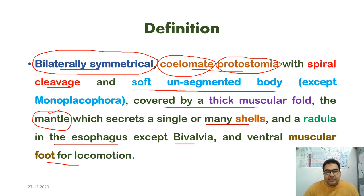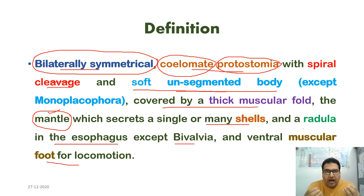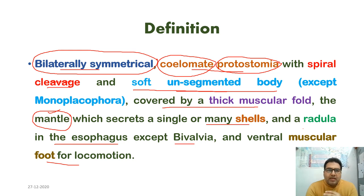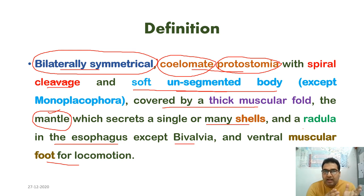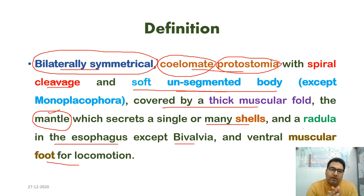The mantle is a thick muscular fold and is a unique feature of mollusks. It secretes the single or many shells. Shells can be external or internal — organisms like Sepia, Loligo, and octopus have internal shells. The shell is a unique feature present at some point in the life cycle, whether in larval or adult form, though some organisms lose it in the adult stage.